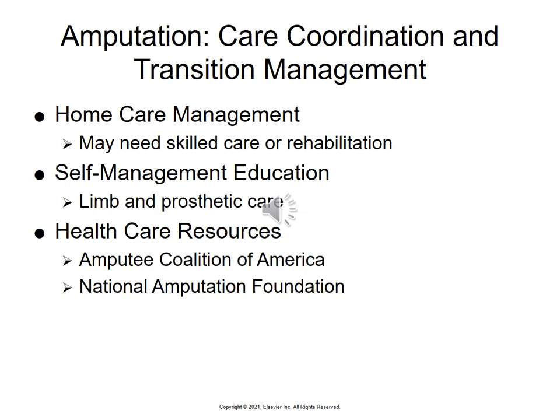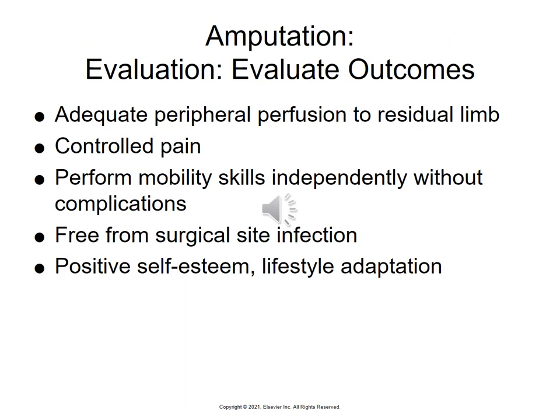For home care, amputation patients need physical therapy, occupational therapy, and education on limb and prosthetic care. They need to wear their prosthesis whenever they are mobile, watch for signs of infection, and keep everything clean. Healthcare resources include the Amputee Coalition of America and the National Amputation Foundation. Goals include good pulses in the residual limb, controlled pain, independent mobility skills, correct use of devices, freedom from surgical site infection, and a positive self-esteem.